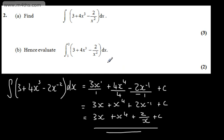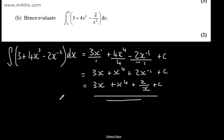In part B it says hence evaluate the integral from 1 to 2 of 3 plus 4x cubed minus 2 over x squared with respect to x. Two marks for this part, so all we're doing now is evaluating.